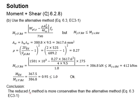Comparing the two methods used to determine the reduced moment capacity when moment and shear act concurrently on the beam, the reduced Fy method is found to be more conservative.